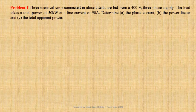Three identical coils connected in closed delta are fed from a 400-volt three-phase supply. The load takes a total power of 50 kilowatt at a line current of 90 ampere. We have to determine the phase current, the power factor, and the total apparent power.